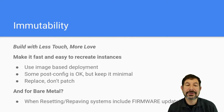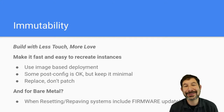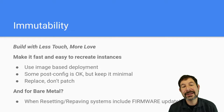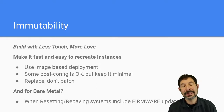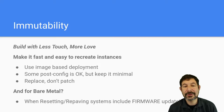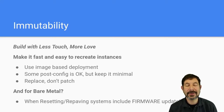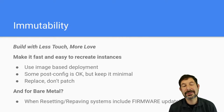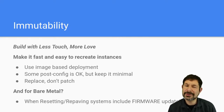Immutability is absolutely critical. 'Less touch, more love' is the way I like to think about this. The beauty of immutability, when you get it right — think about deploying an image instead of building an image from configuration — is that it makes it very fast and easy to recreate instances. You can stamp out and repeat your success much, much faster. You replace instead of patch or change, which means image-based deployments are really important tech.